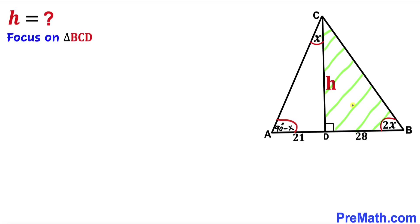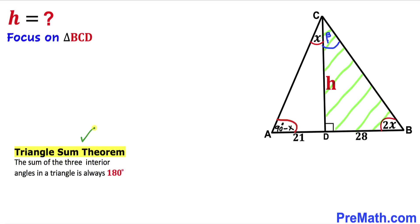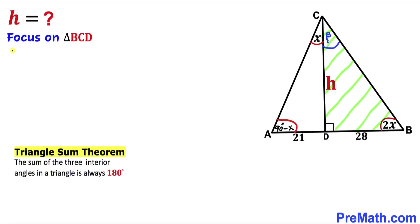Here's our next step. Let's focus on another right triangle BCD. We know this angle is 2x and this is our 90 degree angle. Let me go ahead and call this angle beta. And now let's recall the triangle sum theorem — the sum of three interior angles always equals 180 degrees. So: beta plus 2x plus 90 degrees equals 180 degrees.